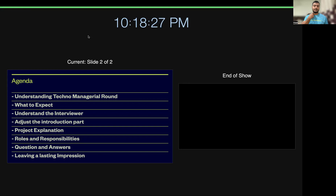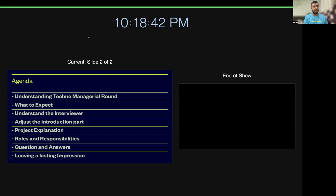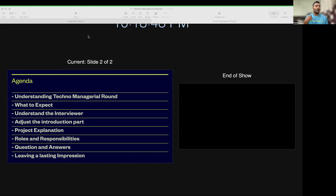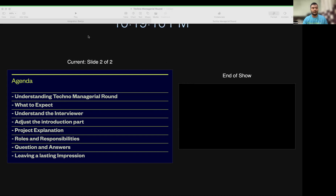The project explanation part is the core of the techno manager round. The way you explain your project will determine the next set of questions and decide if you are going to make it or not. Your explanation should cover your roles and responsibilities and how the project works at the company level — for example, it was an agile project with two-week sprints: one week for development, three days for testing, and the final day for hypercare.